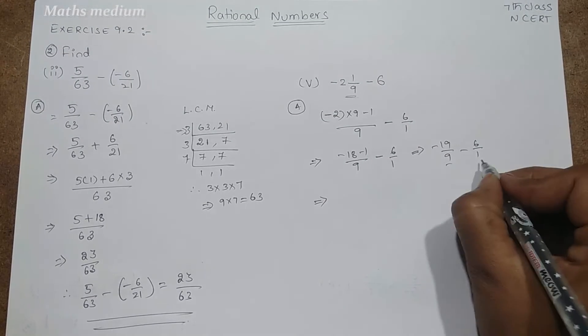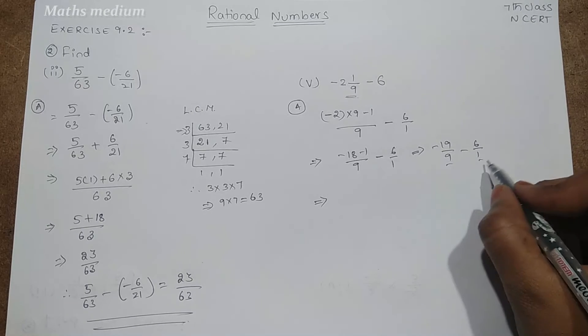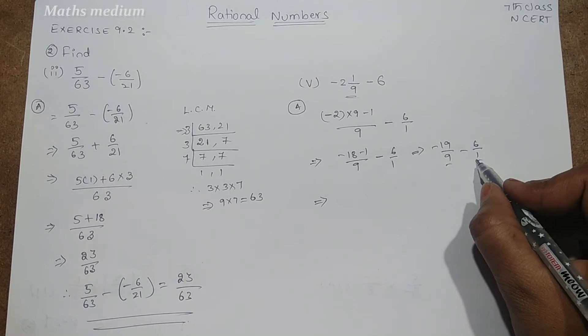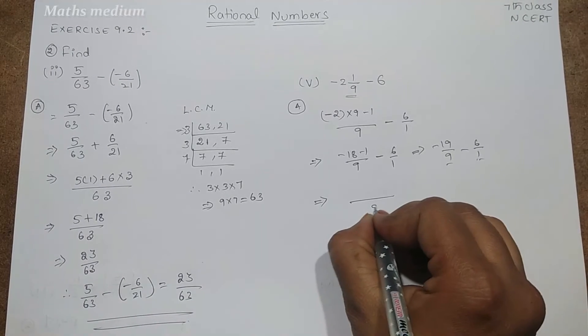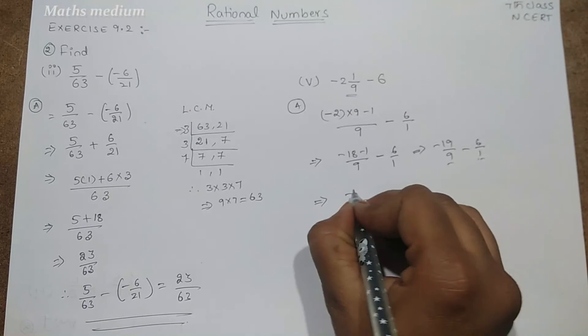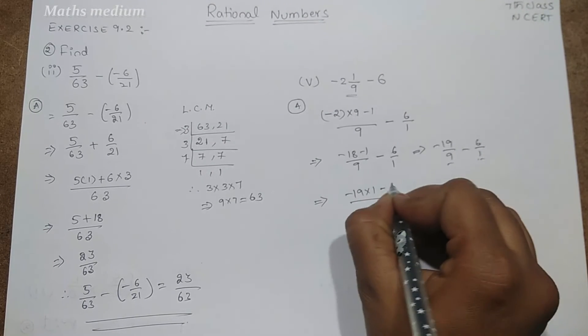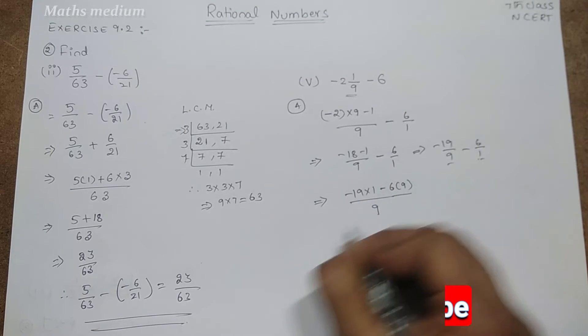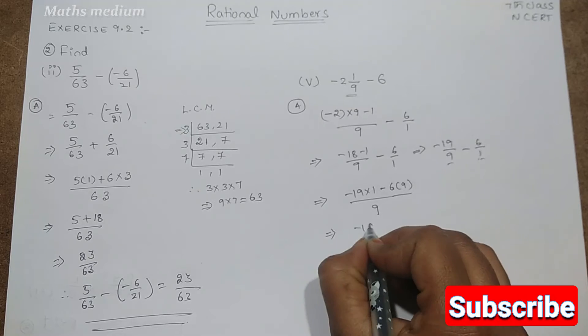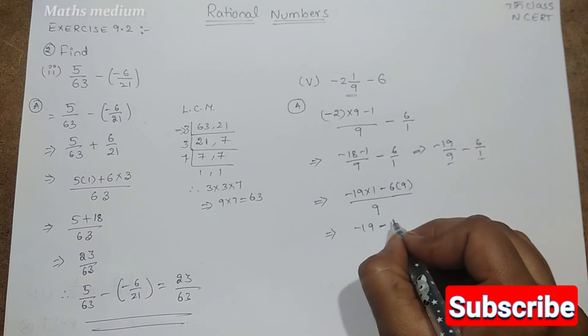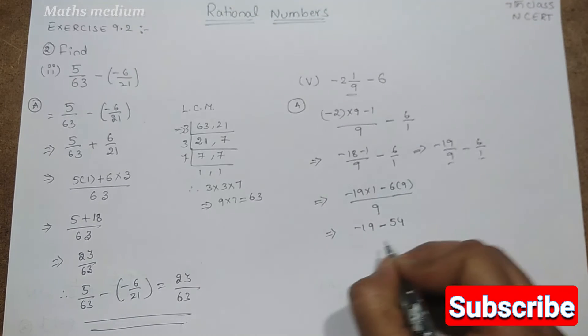So now we have to take LCM for these two denominators. But there is a one, right? So let's take the denominator as 9. So minus 19 into 1 minus 6 into 9. So minus 19 minus, 6 nines are 54 by 9.